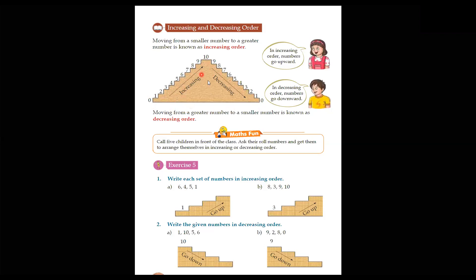Increase means increase. In increasing order, numbers go upward — upward means going upward. And in decreasing order, numbers go downward. Moving from a smaller number to a greater number — smaller number 0 to a greater number 10 — is called increasing order. And moving from a greater number to a smaller number is known as decreasing order.